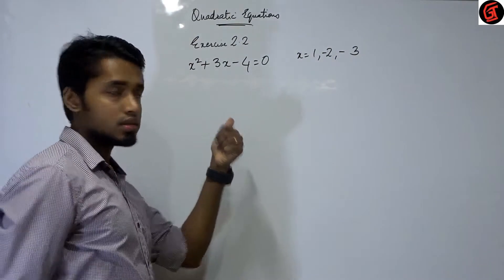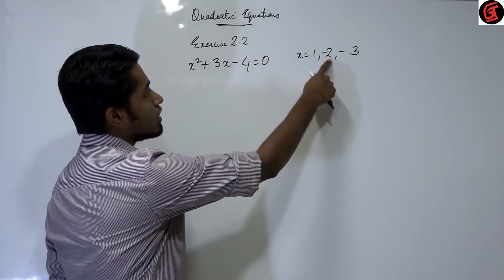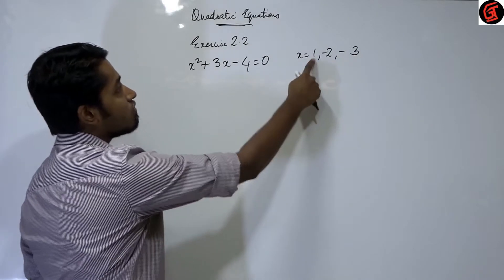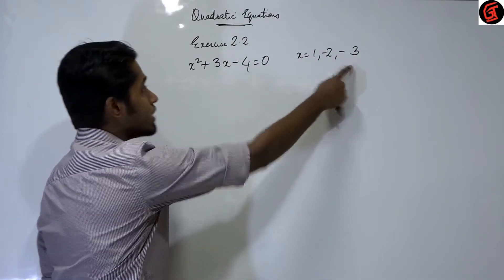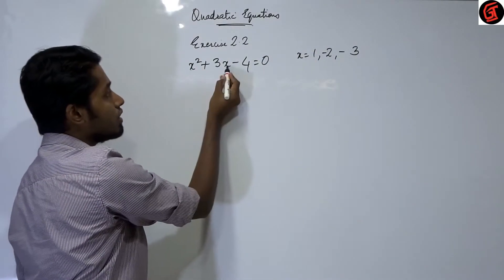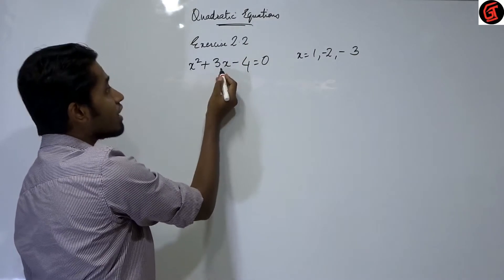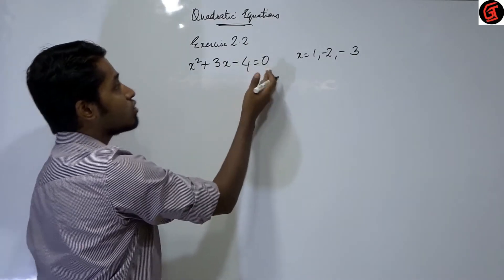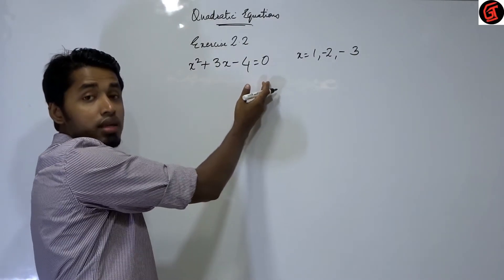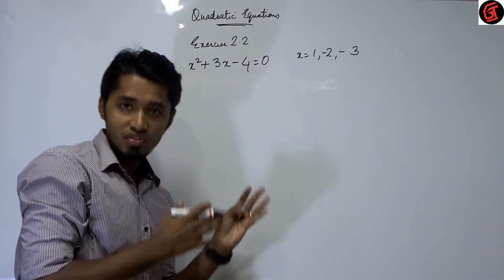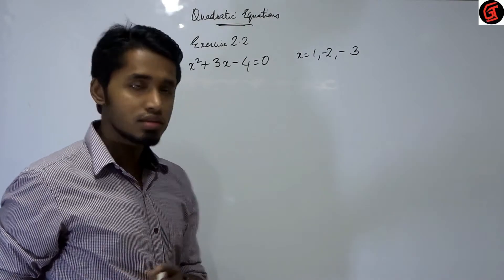Now what are we to do in this? These values are already given to us. We have to substitute these values in place of the variable and find out if we are getting LHS equal to the RHS. What does LHS and RHS mean? Left hand side and right hand side.